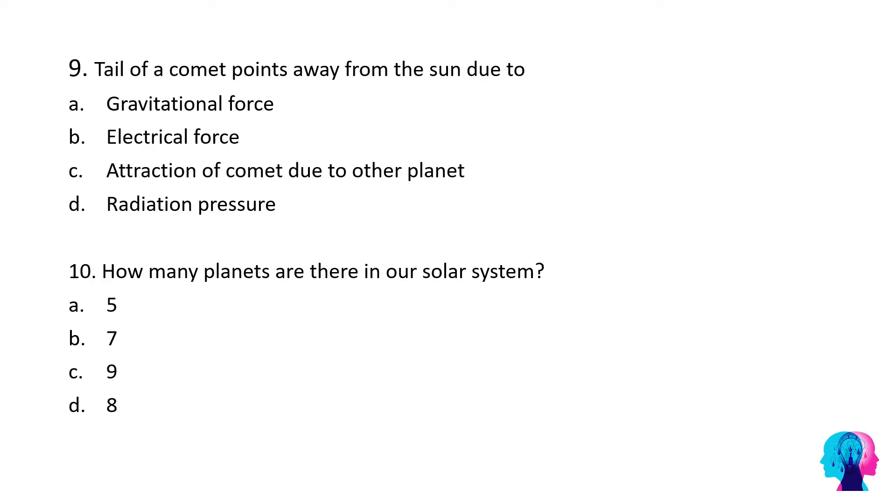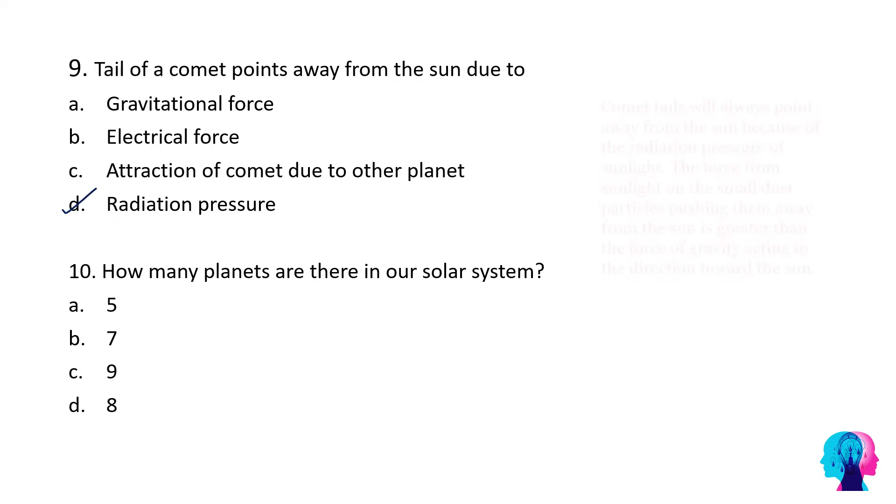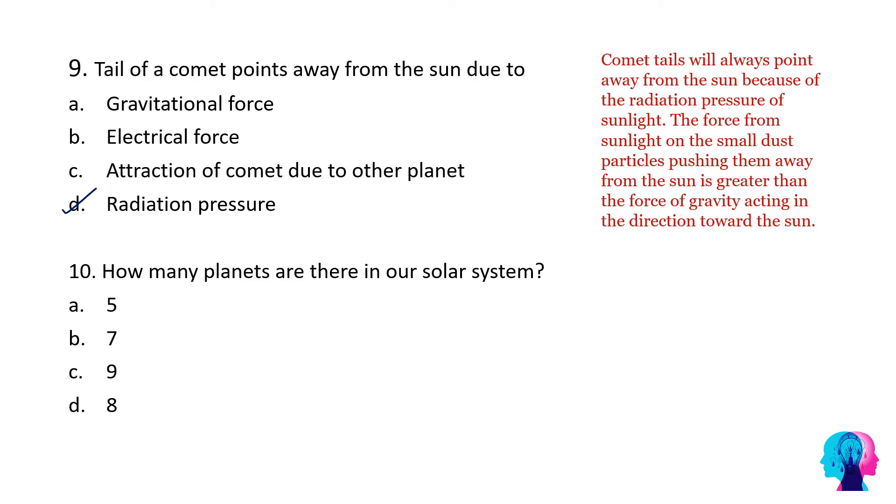Moving on to next question: The tail of comet points away from the sun due to? The correct answer would be radiation pressure. The comet tails will always point away from the sun because of radiation pressure from sunlight. The force from sunlight on the small dust particles pushes them away from the sun, which is greater than the force of gravity acting towards the sun.